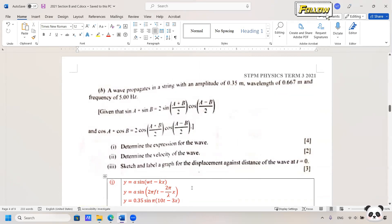You need to recall the general equation of a progressive wave: y equals a sin omega t minus kx. So a is the amplitude, omega is the angular frequency equal to 2πf, and k is the wave number that can be expressed as 2π over lambda. I explained the derivation before and you can refer back to the video if you don't remember it.